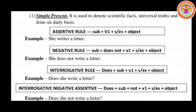Simple present tense is used to denote scientific facts, universal truths, and work done on a daily basis. Now we have four formats of simple present: assertive (affirmative), negative, interrogative, and interrogative negative. For the affirmative form — the assertive rule — the structure is: Subject + V1 (with S or ES added for third person) + Object.